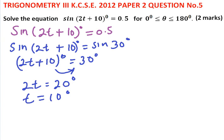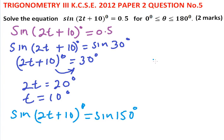Again, in the second quadrant, sin is also positive, and therefore sin(2t + 10)° is the same as sin 150°. This implies that 2t + 10 = 150°.